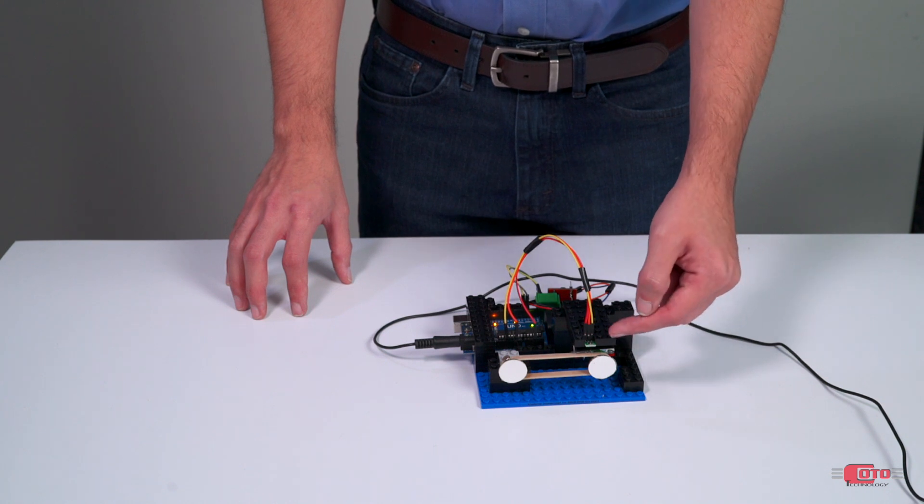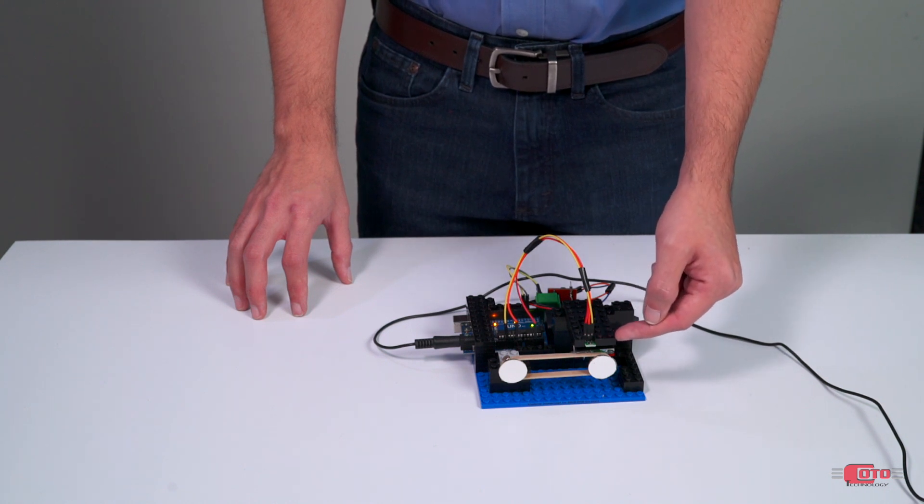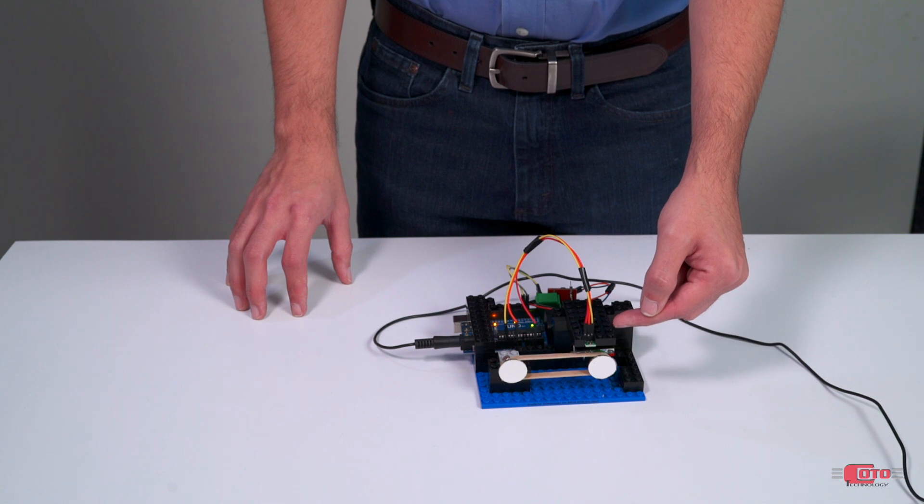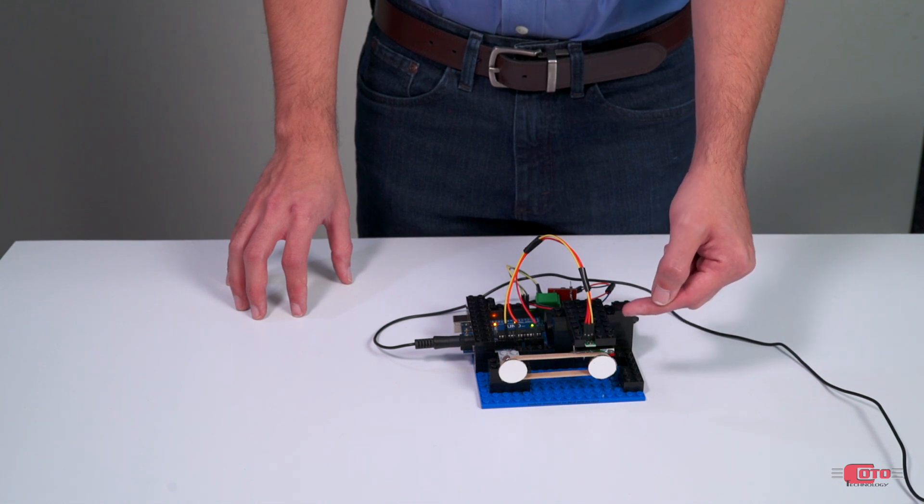What happens is there is a TMR sensor placed here so that when the magnet comes near the TMR sensor, the TMR sensor will pick up the field, it will stop the motor, and then continue.